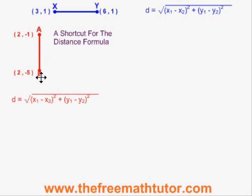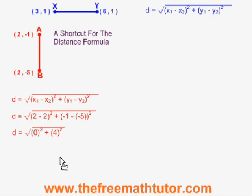In the case of ab, I am replacing x1 and y1 with 2 and negative 1, and replacing x2 and y2 with 2 and negative 5. When I plug these values in, I get the distance formula simplifying like this. I end up with a distance of 4 units.